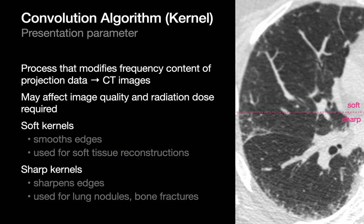Convolution algorithms or kernels are different from reconstruction algorithms. Kernels control the tradeoff between information and noise in the raw data fed into the reconstruction algorithm. Soft kernels produce a smoother, less noisy image but tend to blur anatomic interfaces slightly. Sharp kernels produce sharper images that tend to be more noisy. We generally prefer sharp kernel images when looking at lung parenchyma and soft kernel images when looking at solid organs.